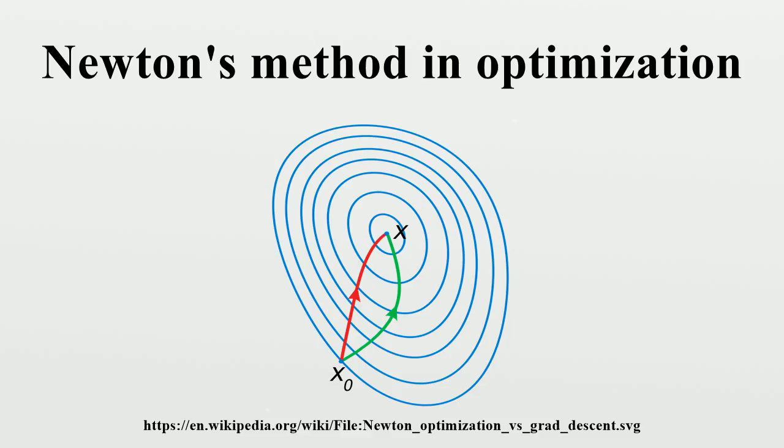Geometric interpretation: The geometric interpretation of Newton's method is that at each iteration one approximates f by a quadratic function around x_n, and then takes a step towards the maximum or minimum of that quadratic function.